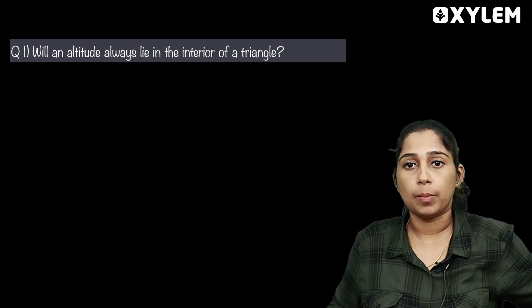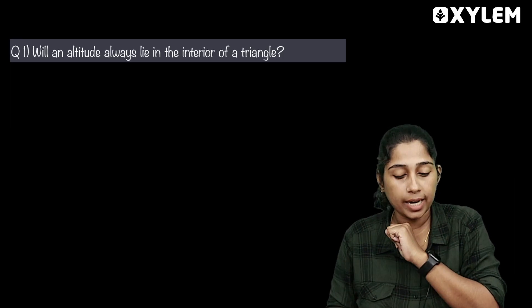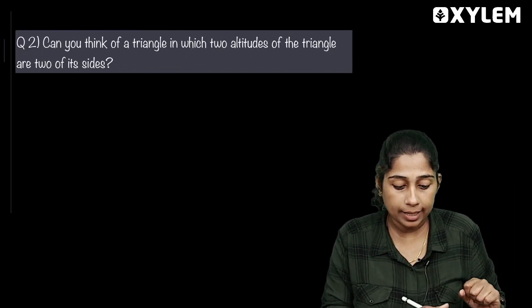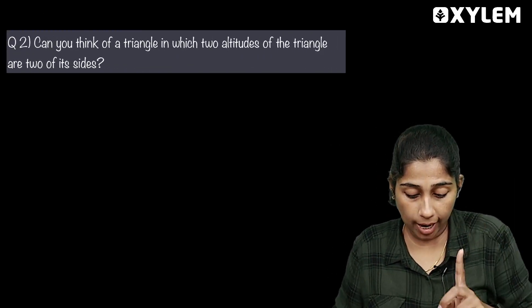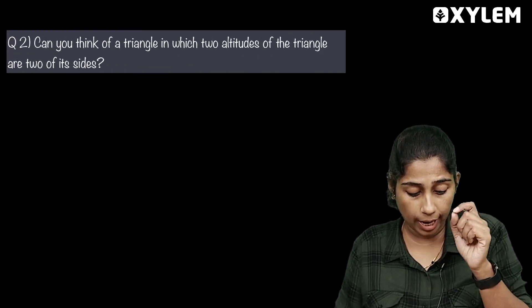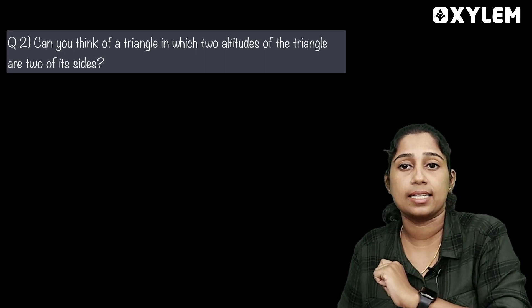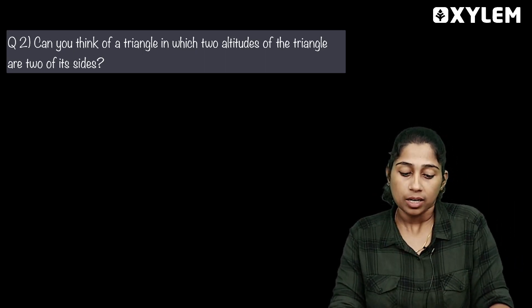Can you think of a triangle in which two altitudes of the triangle are two of its sides? What is the triangle?